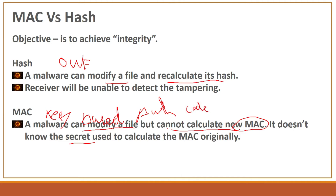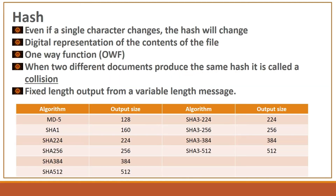The biggest difference is that MAC requires a key to calculate the authentication code, while hash requires no key — just a one-way function algorithm to calculate the hash of a message. The problem with hash is that different messages may produce the same output, known as a collision, depending on the algorithm used. Even a single byte change in a file will change the entire hash — it is a digital representation of the contents of the file.